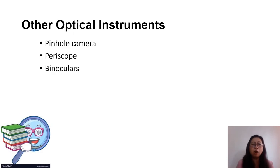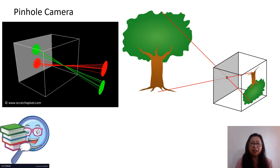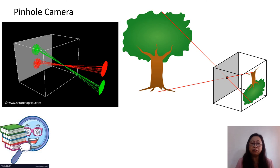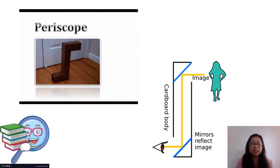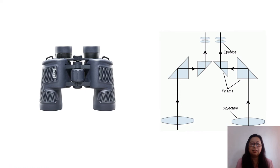Here are other optical instruments. A pinhole camera uses a hole to allow light to enter a small box. The image is seen on the back portion of the box as an inverted, reduced image of an object. A pinhole camera proves that light travels in a straight line. A periscope uses plane mirrors, and the image is produced by the reflection of light on the surface of the mirrors. A binocular uses convex lenses and prisms to produce the desired image.